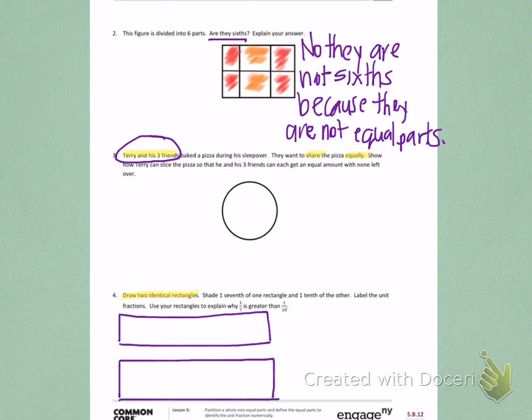Next, I need to shade 1/7th, and then I need to shade 1/10th. So in my first rectangle, I need to divide it into seven equal parts. And then in my second rectangle, I need to divide it into 10 equal parts. To start that, I'm going to divide it into fifths, and then I'm going to divide my fifths in half.